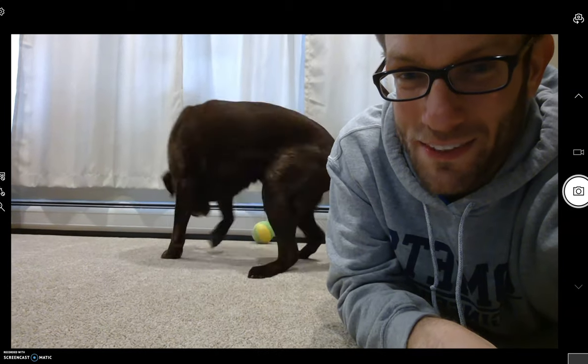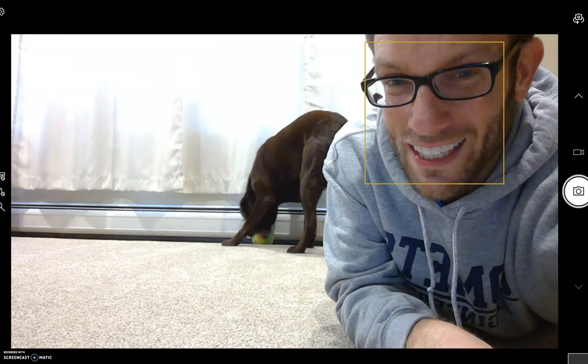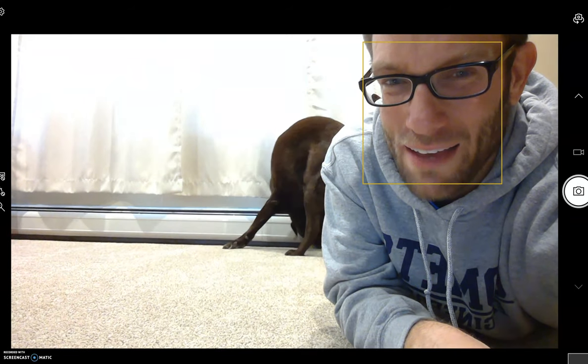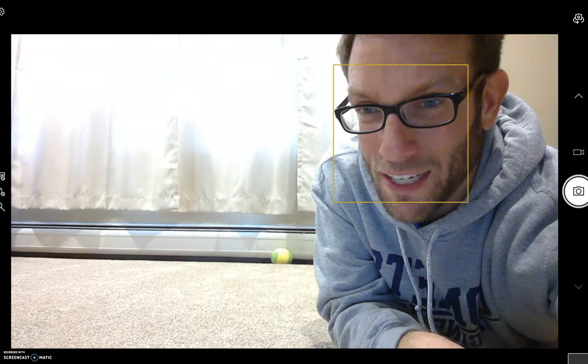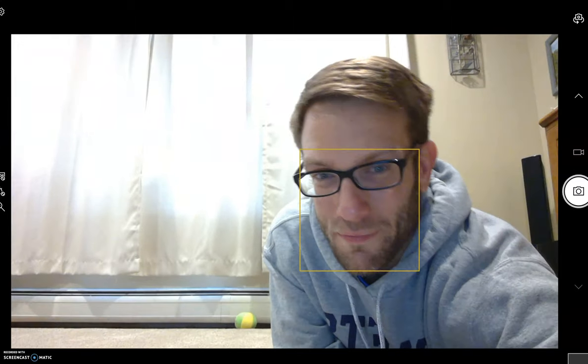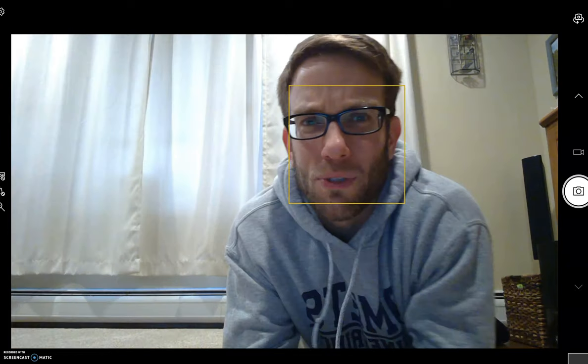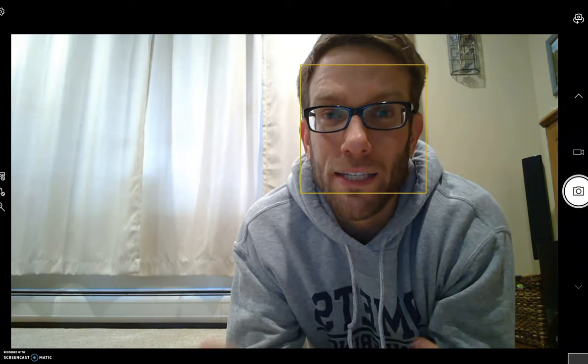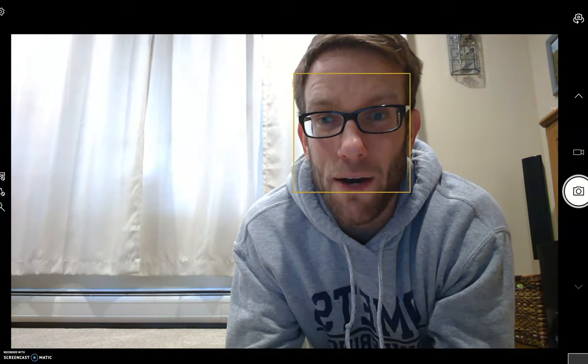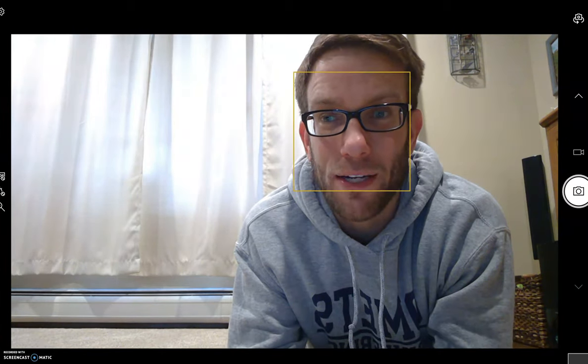Those of you who may have labs, you know they come in basically three colors: they come in black, they come in chocolate, and they come in yellow. It's actually an interesting genetics problem to figure out. You can actually predict what color Labrador puppies will come out based on their parents, and that's what I wanted to show you guys today.